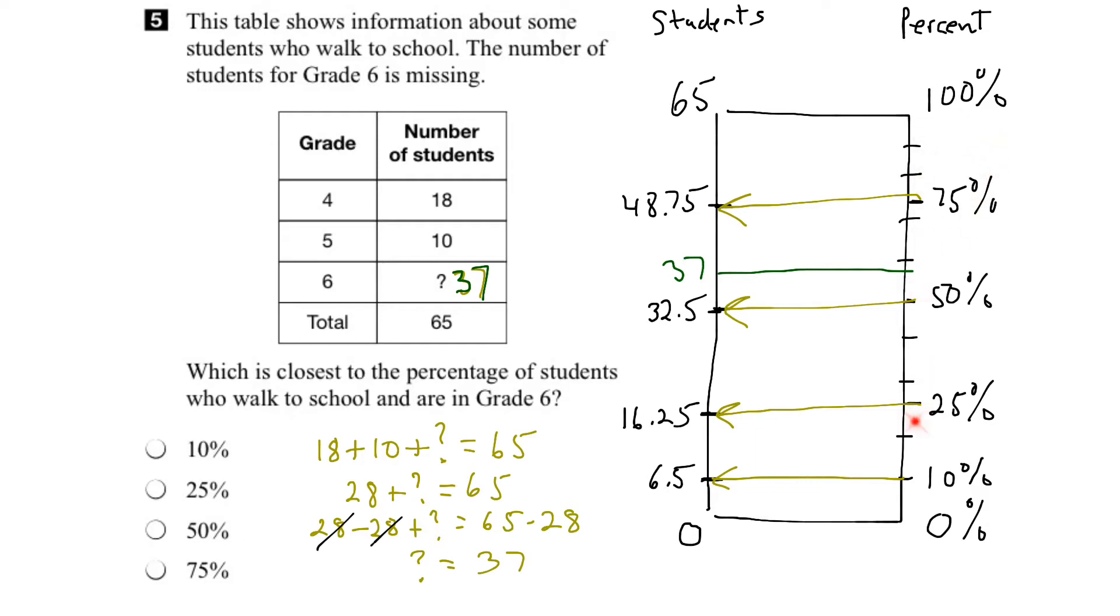So which of these percentages, then, is this number 37 closest to? Well, when we go across, we can see it's closest to 50%. So when we look at our options, the right answer would be this one, 50%. In other words, of the students who walk to school, approximately 50% of them are in grade 6.